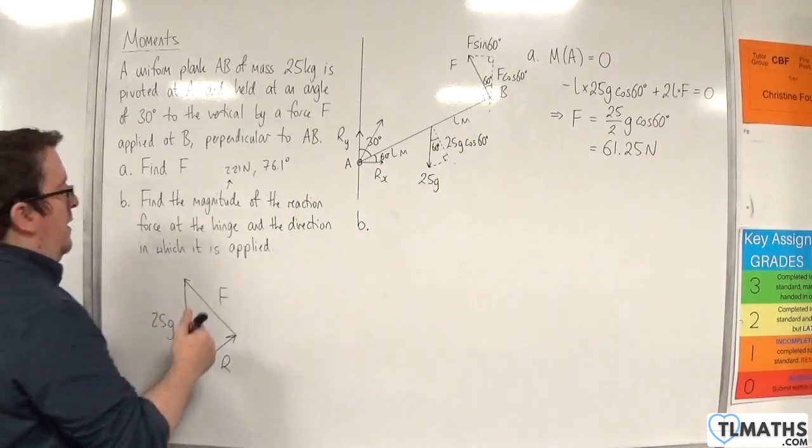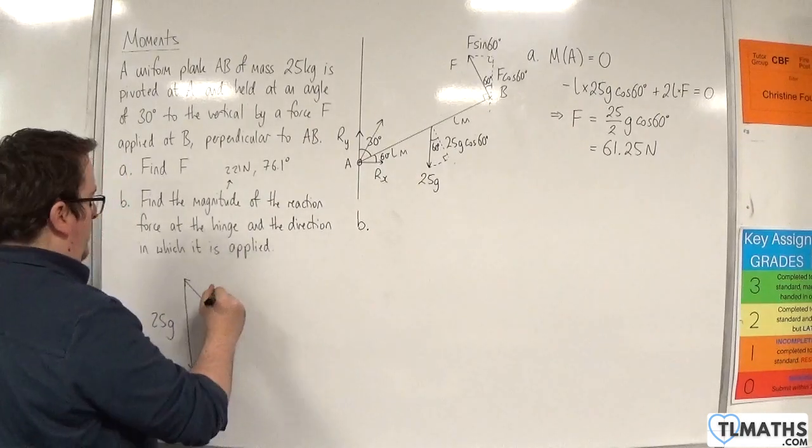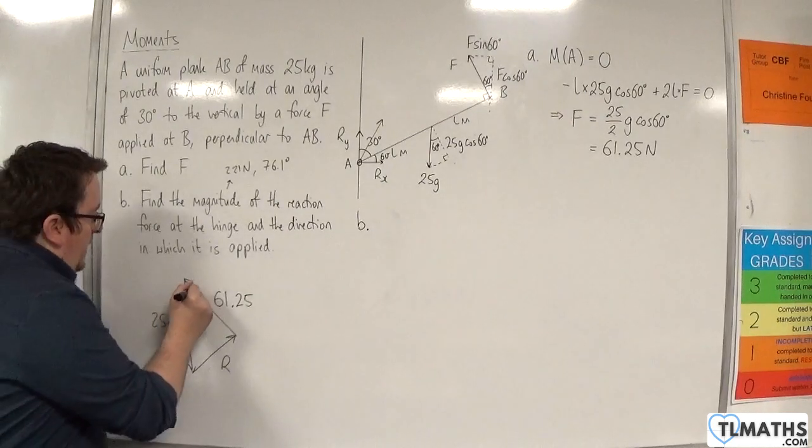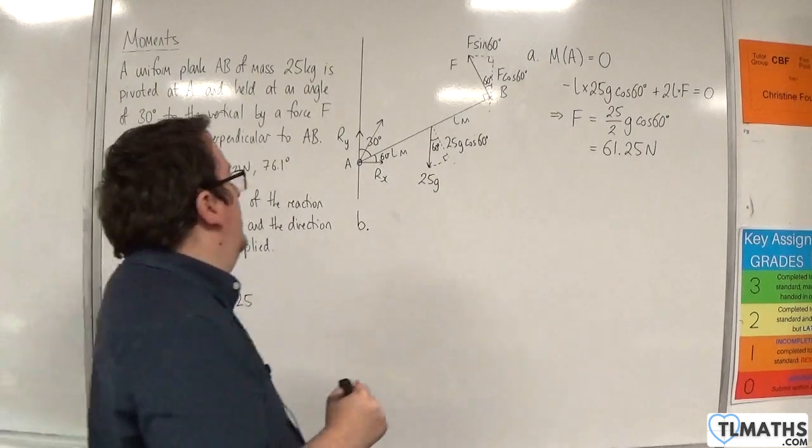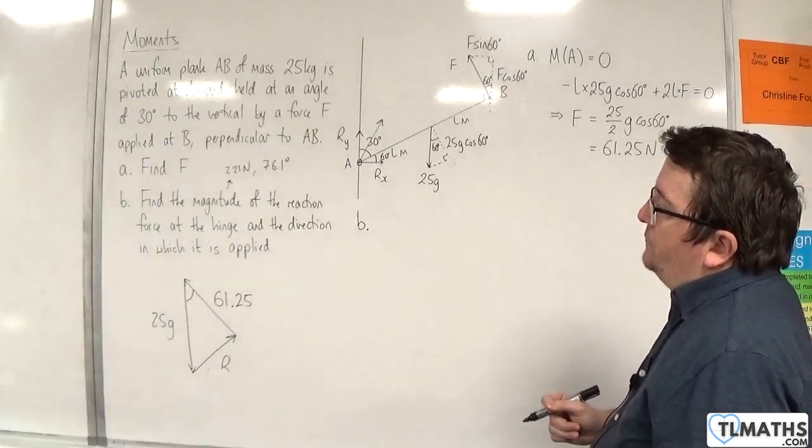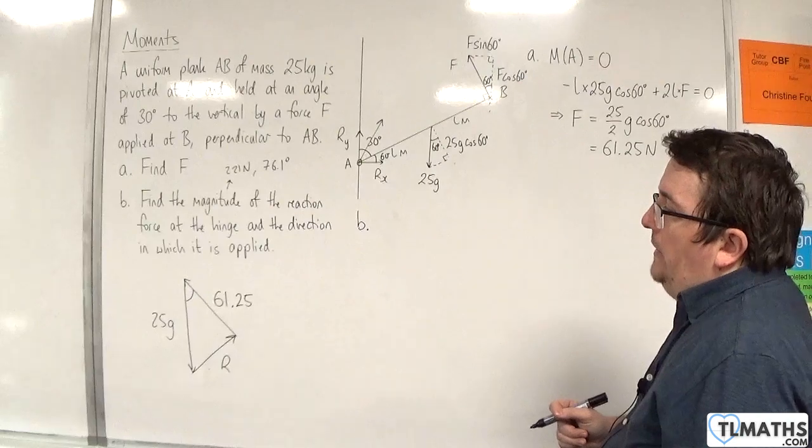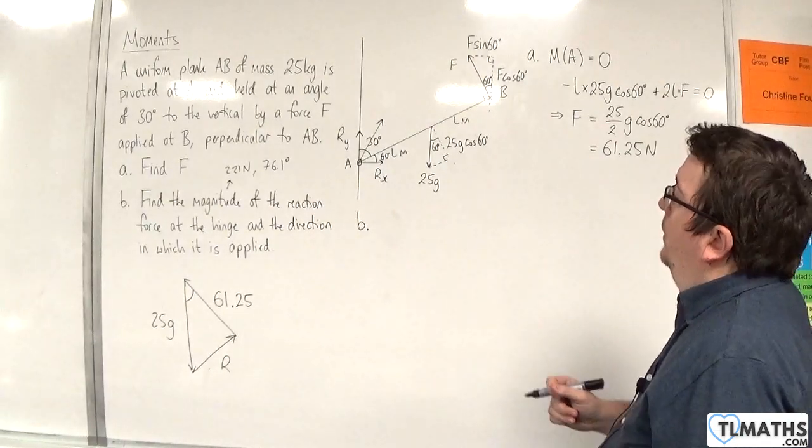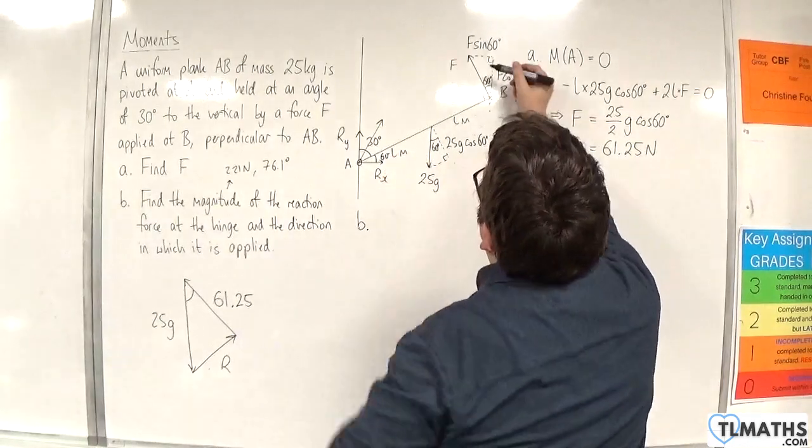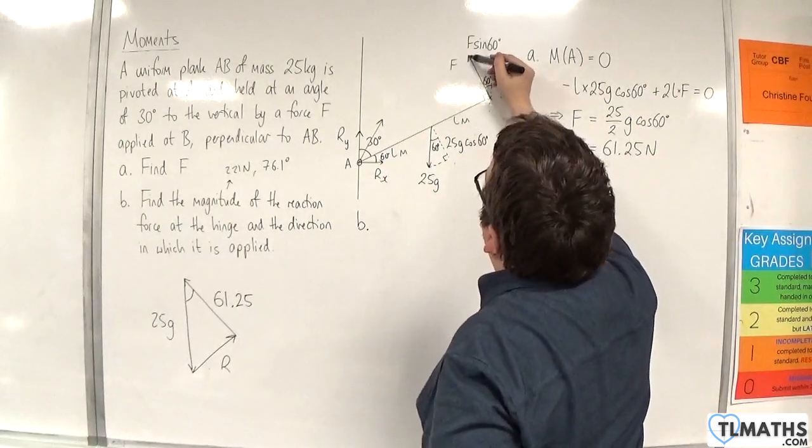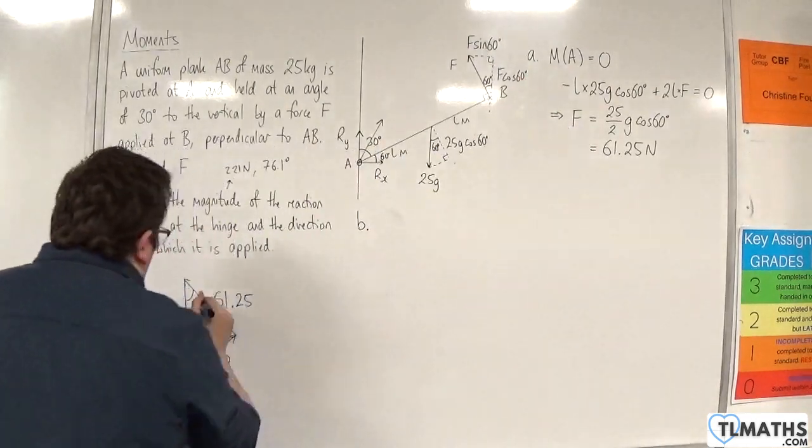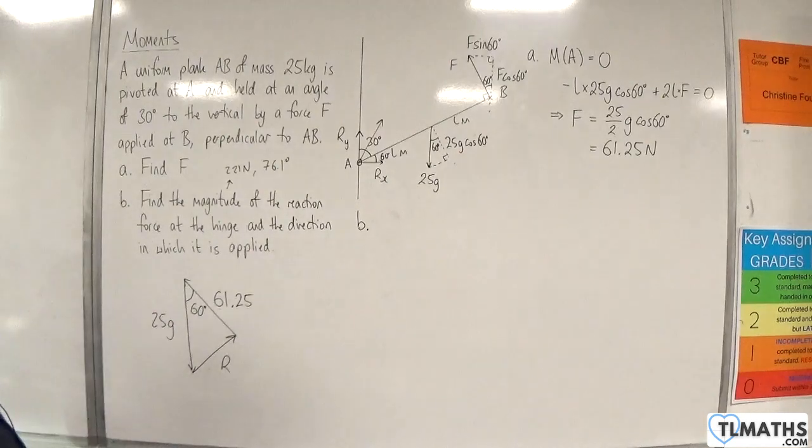We've worked out F, that's 61.25. The key bit here is making sure you get that angle right. That angle in connection with those two forces, vertical force and that one. If you've got that force coming down, if that's 60 degrees, that has to be 60 degrees. So this is 60 degrees here.